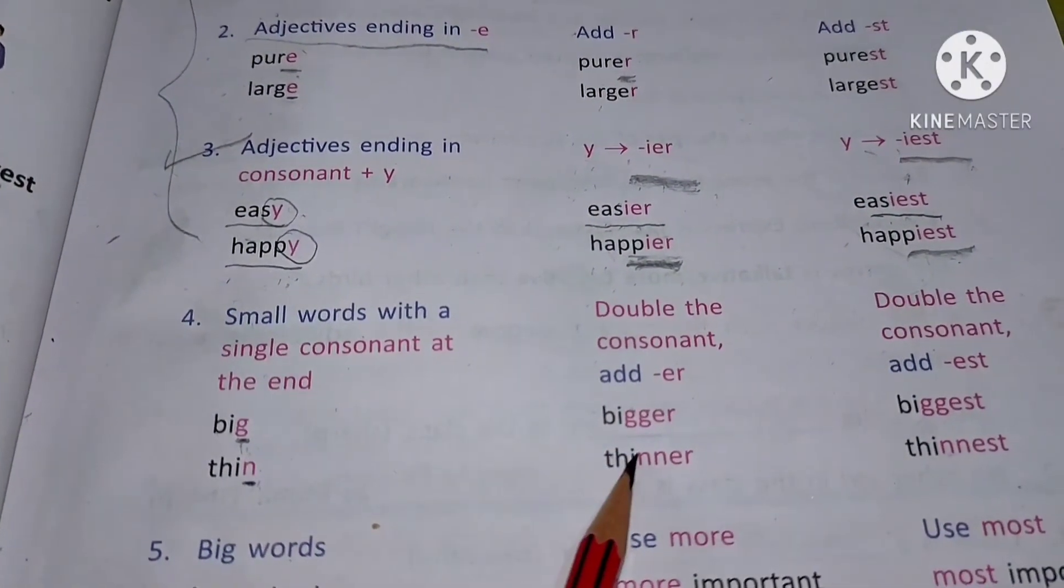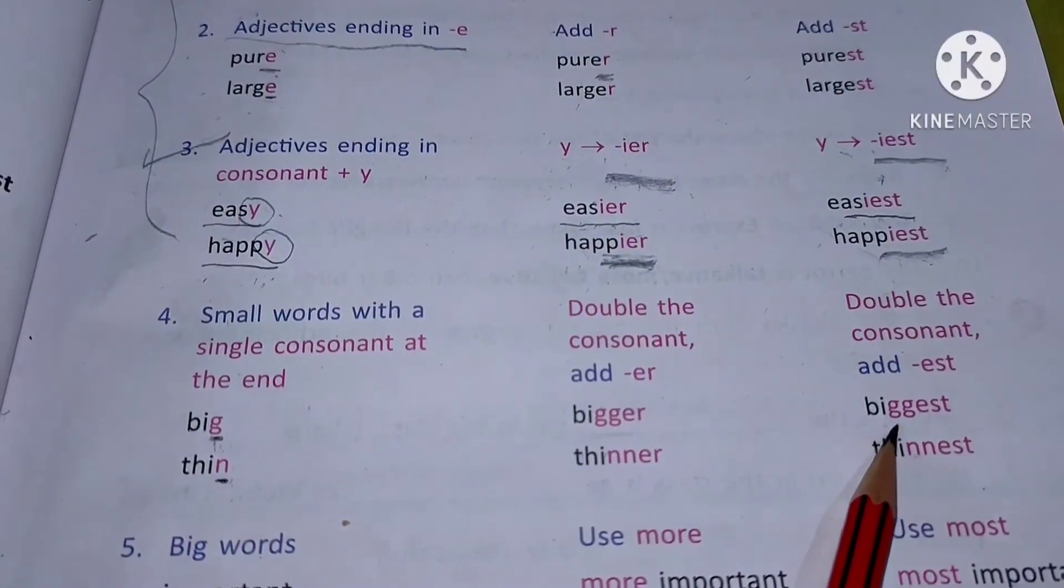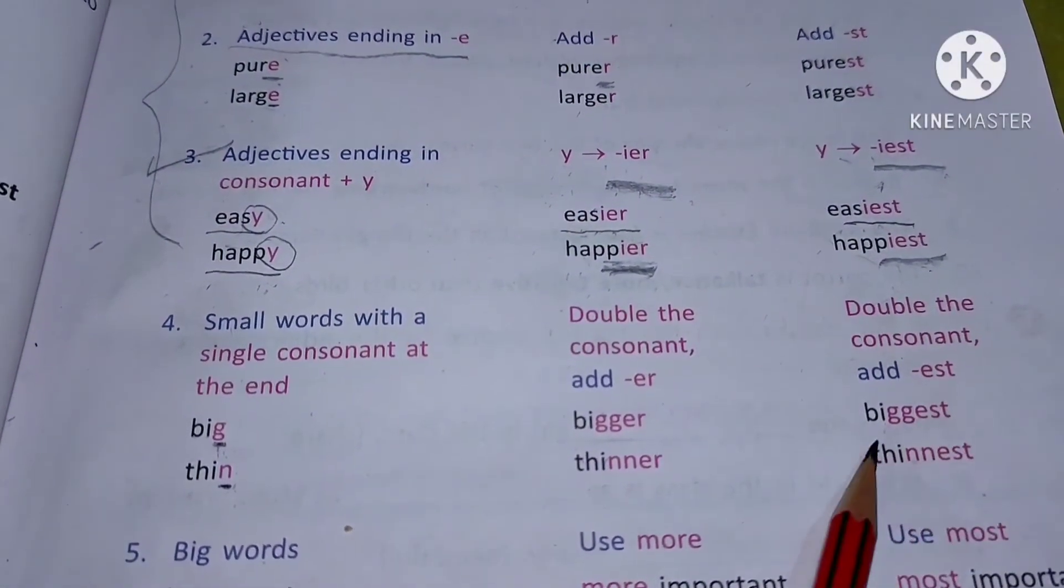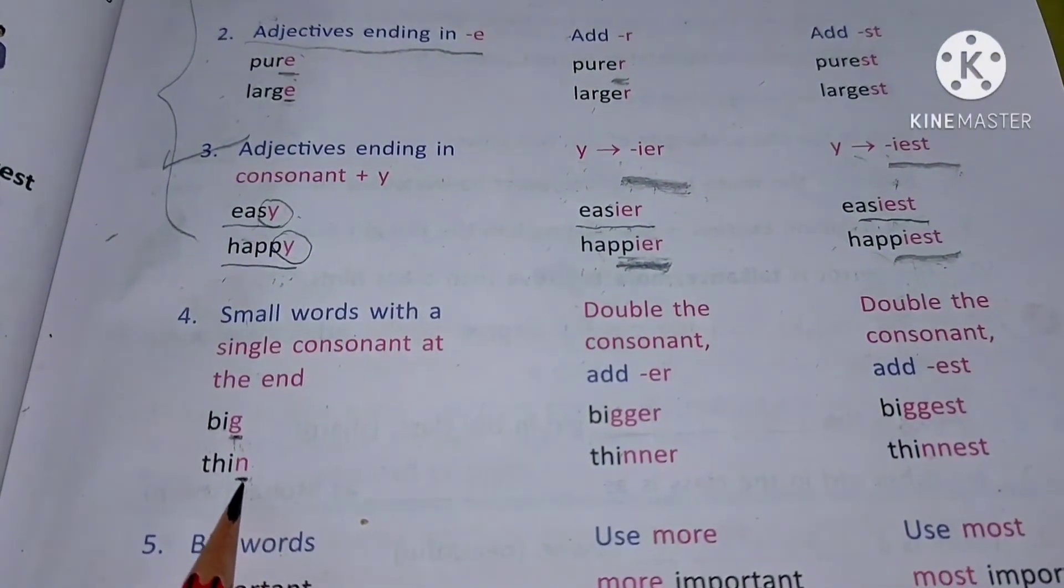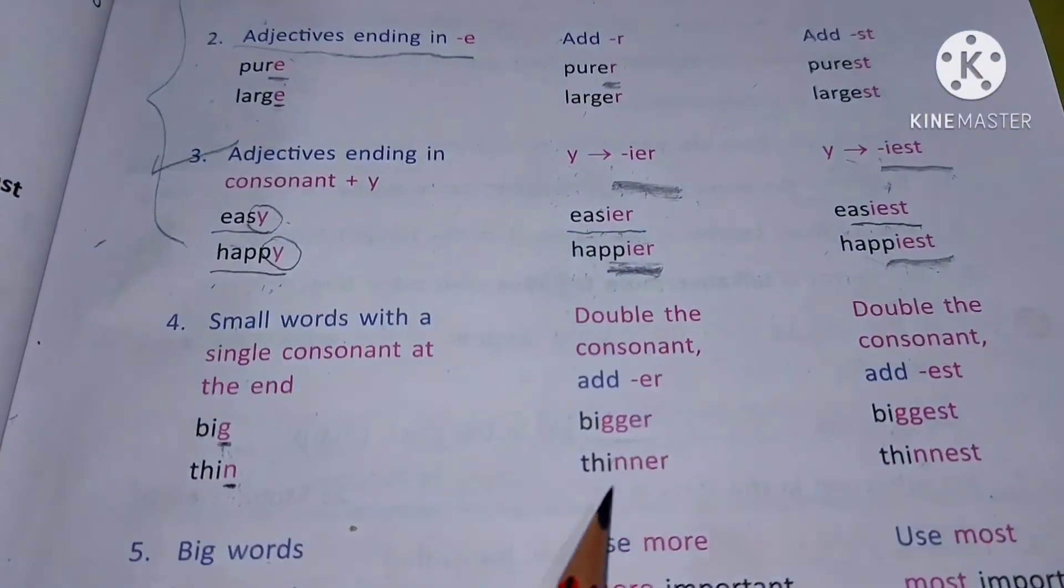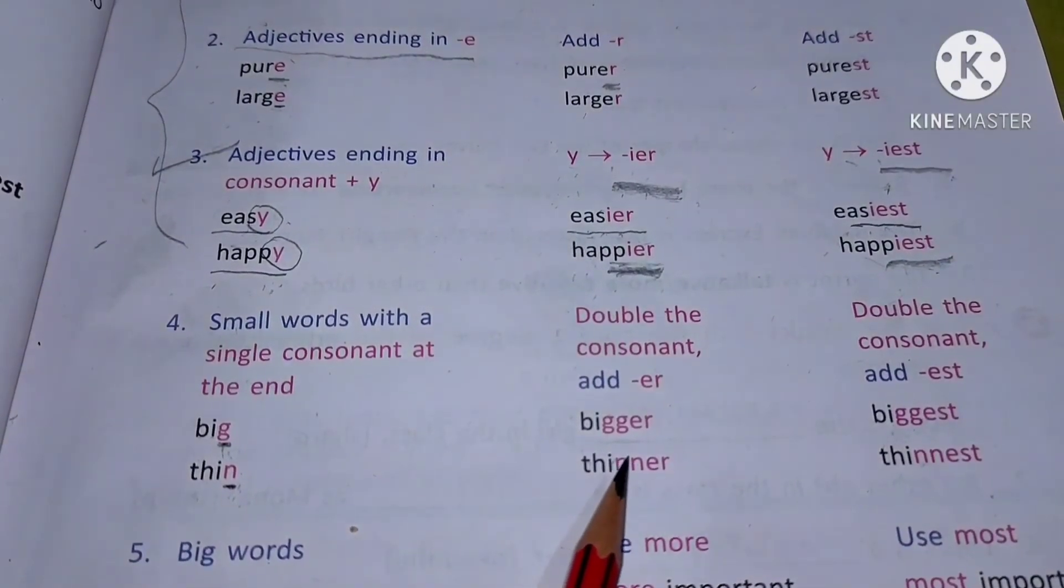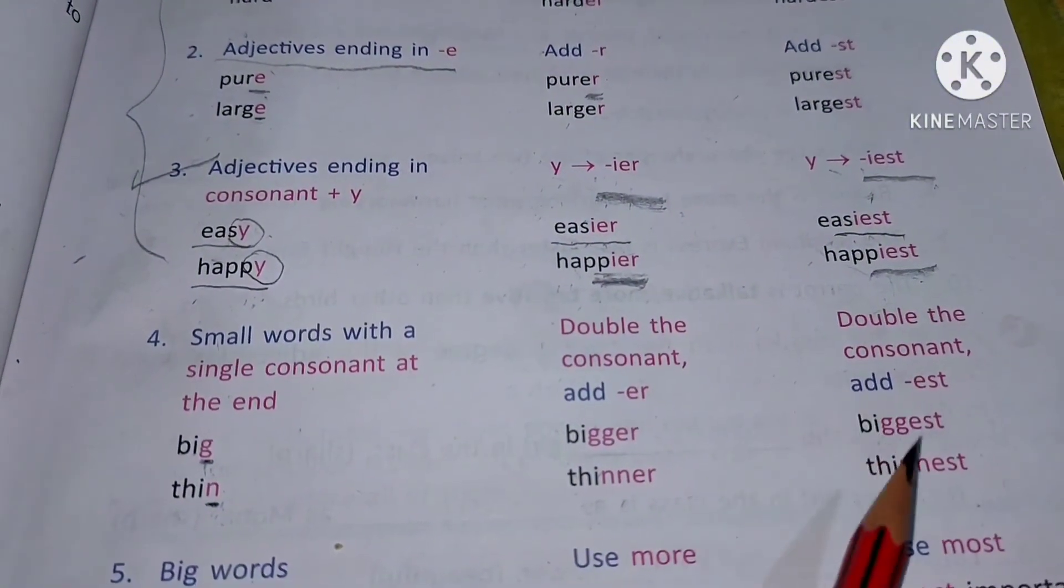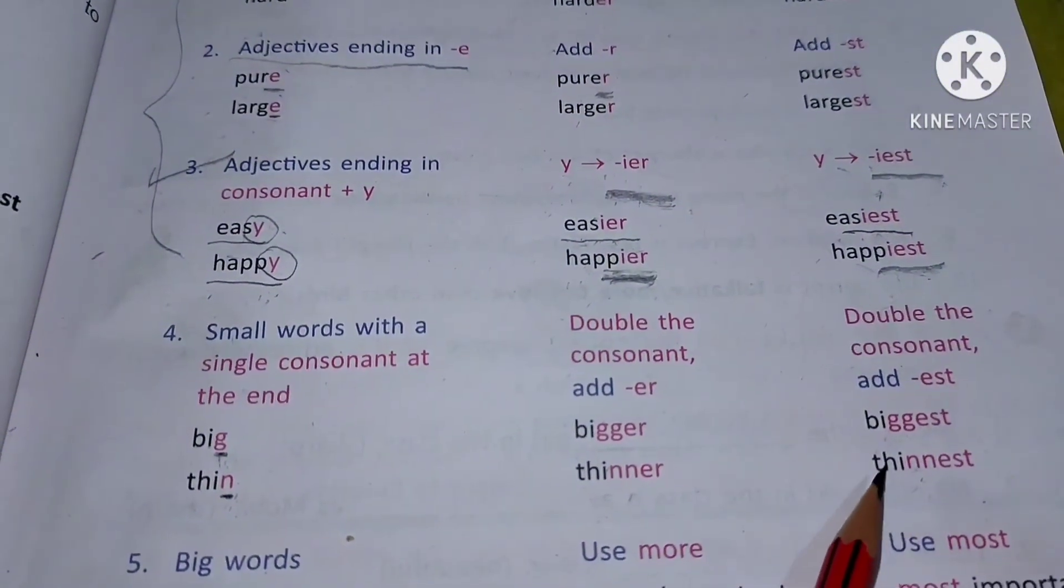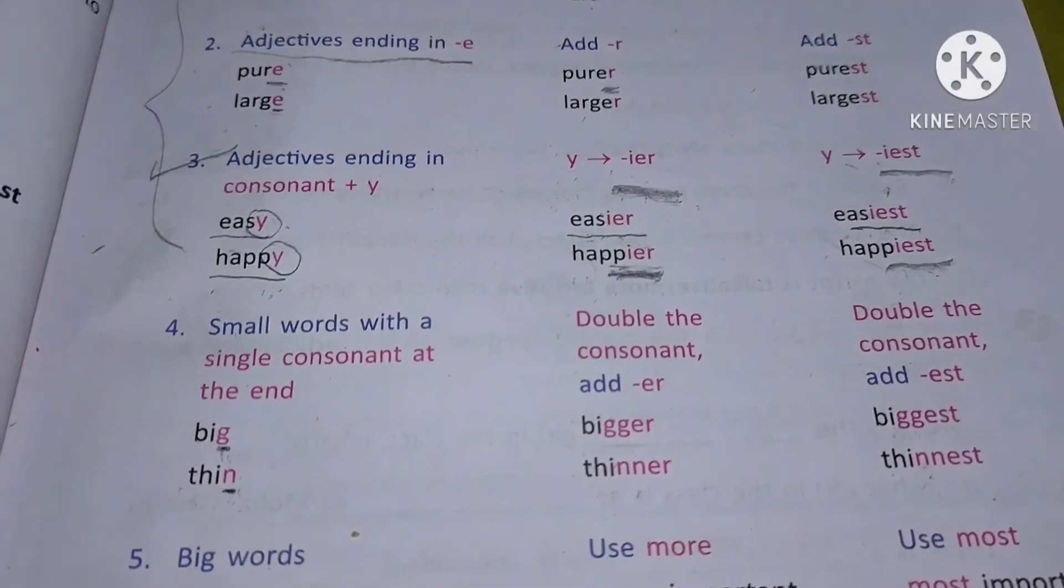So big comparative: bigger. And same with superlative, you need to just double the consonant and add e-s-t, so biggest. Thin - thin mein again n is your consonant. Double the consonant. In case of comparative degree it will become thinner, and in case of superlative also just double the consonant and the answer will be thinnest. Thin, thinner, thinnest.